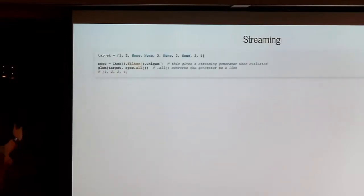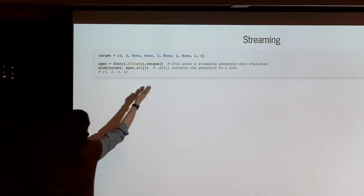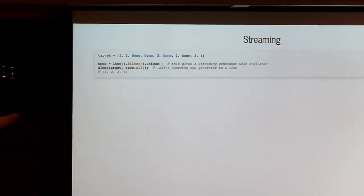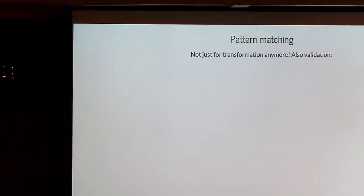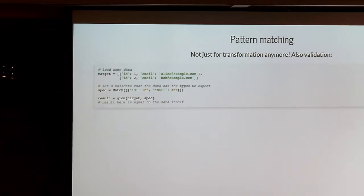When dealing with data, sometimes it doesn't all fit into memory. Python has a beautiful generator thing, so we made a generator composition syntax — in a streaming fashion, you can filter and create a unique list of all the objects. Streaming is supported. And we even support pattern matching before it was cool. Now you can do data validation with Glom before you do data manipulation. Here we're validating that data matches the shape of a list of objects with ID and email as keys and int and str as the types respectively.